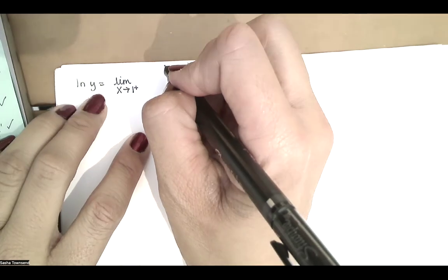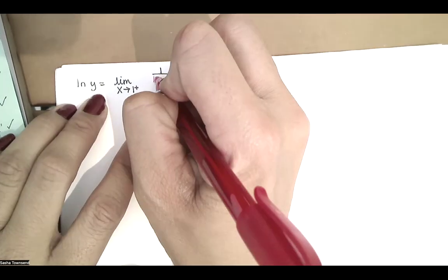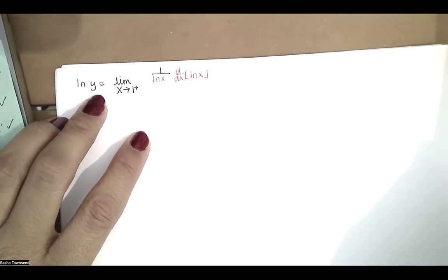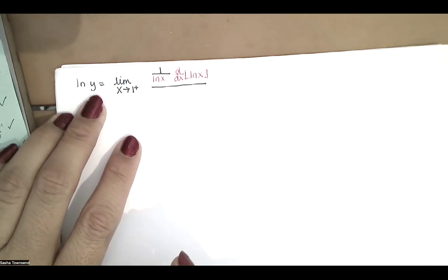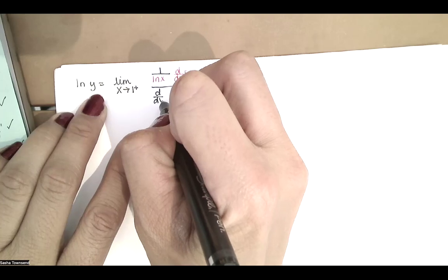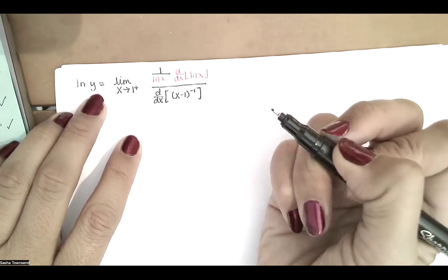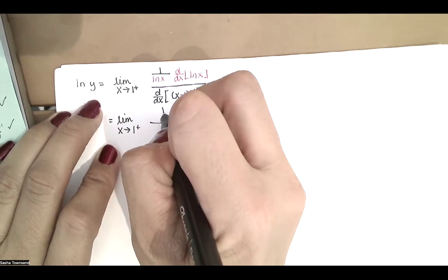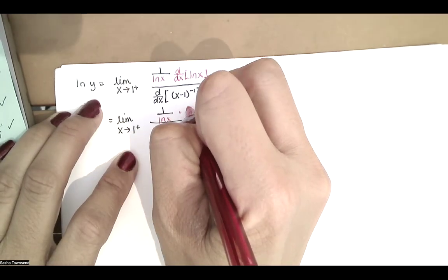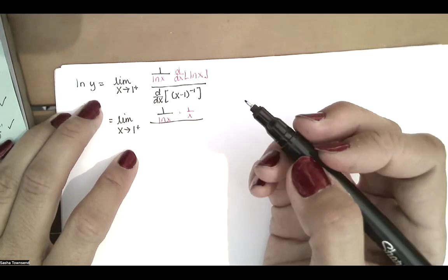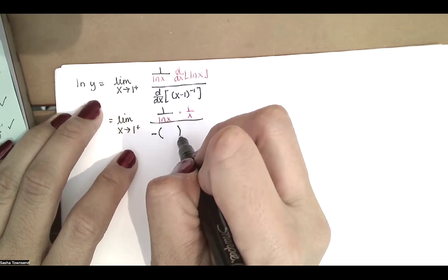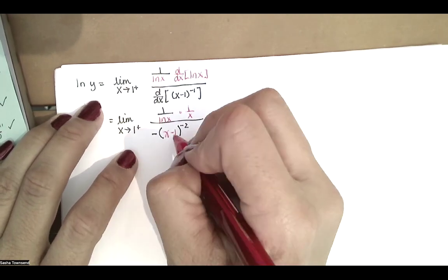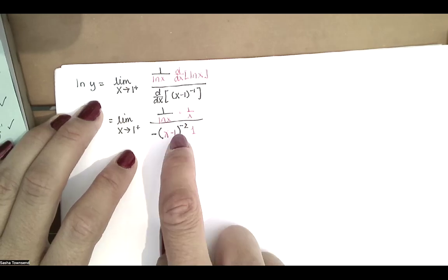We'll take the derivative of the numerator and divide by the derivative of the denominator. The derivative of the natural log of the natural log of x is 1 divided by the inside function, which is natural log of x, multiplied by the derivative of the inside, which is 1 over x, by the chain rule. For the denominator, we have the derivative of 1 divided by x minus 1, which is the same as x minus 1 to the negative 1 power, also requiring the chain rule.